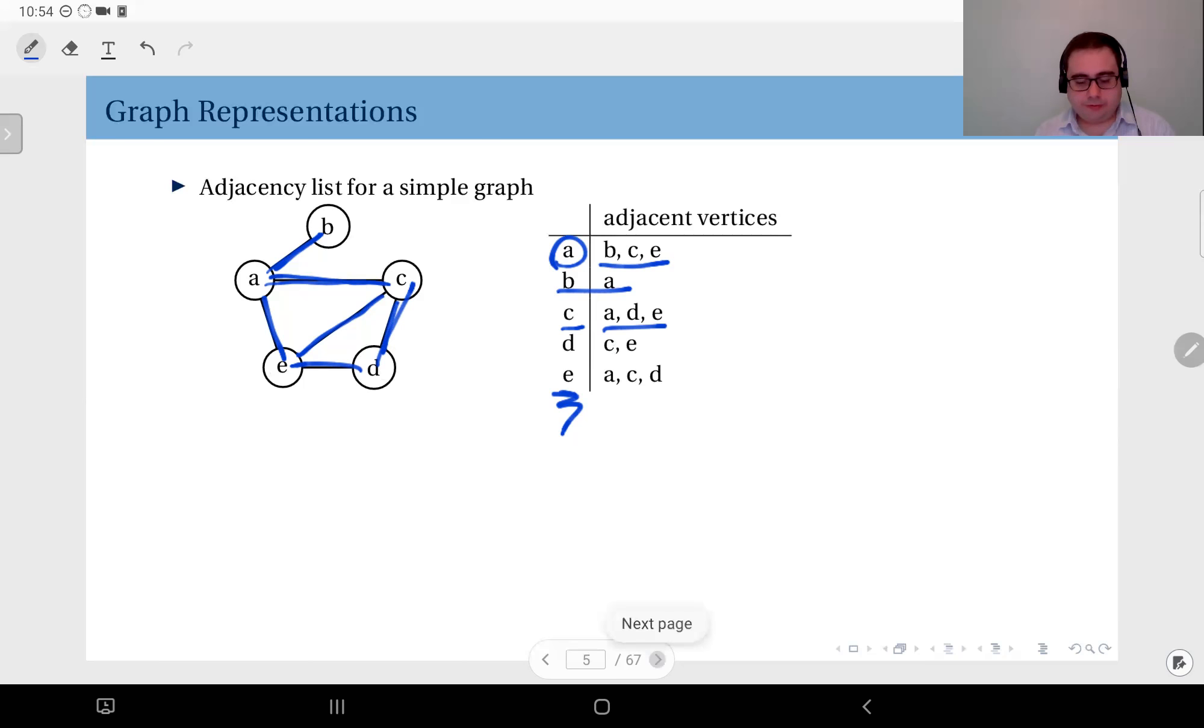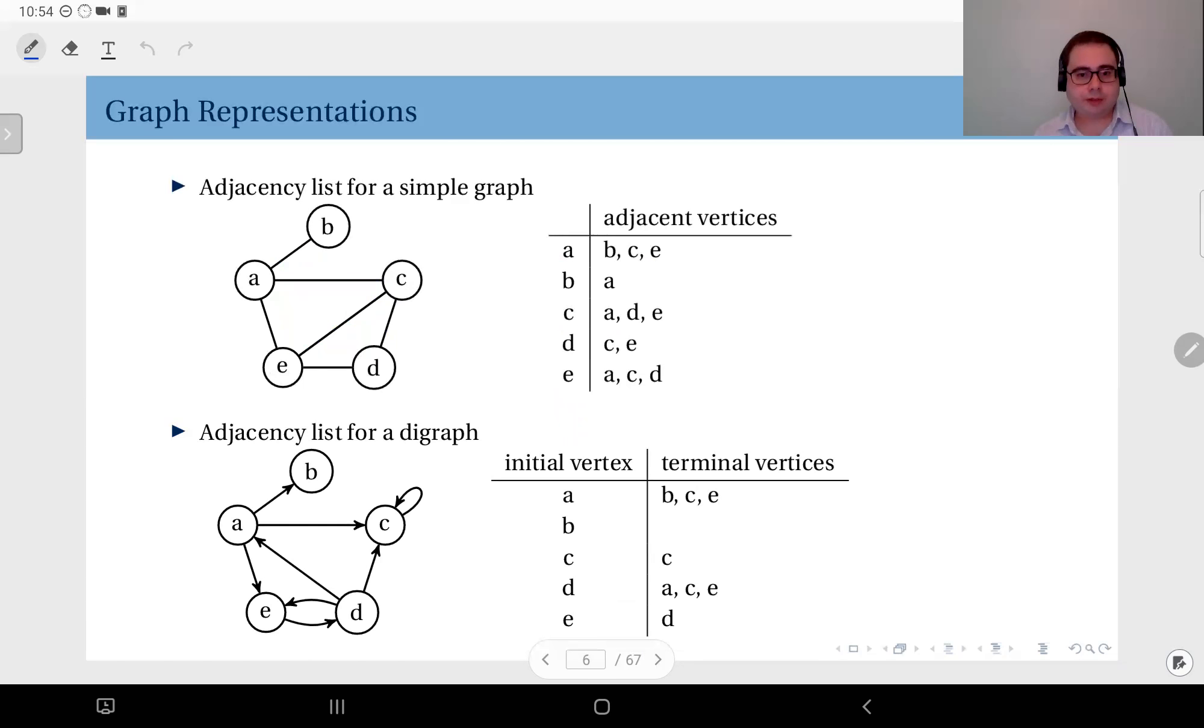Let's see an adjacency list for a directed graph. Here we have an example of a directed graph. Now here you need to specify the direction. Therefore on the left hand side in this column I have again each vertex, but now they are the initial vertices, because direction is important here. I start with the initial vertex and each list is going to list the terminal vertices.